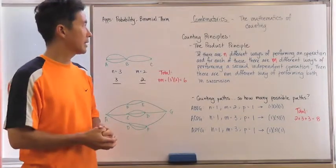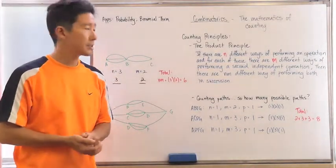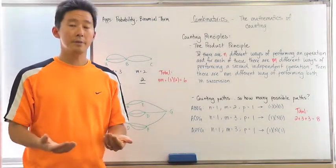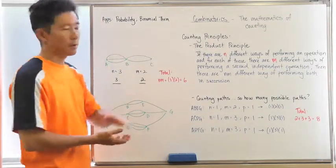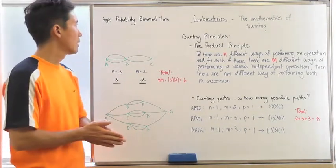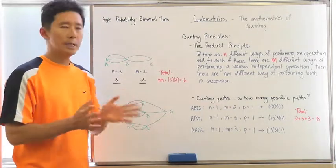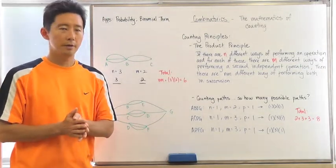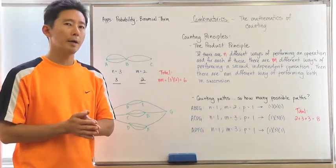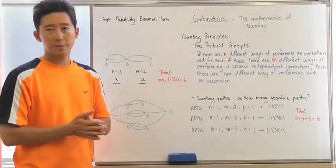Let's take a look at our next topic, which is combinatorics. Combinatorics is the mathematics of counting. We've done some of this in the past — in particular with probability, because if you can count you can calculate probability — and also with the binomial theorem. With the binomial theorem it might not be as clear how combinatorics comes into play, but we'll look at that later after we cover all the different types of combinatorics and counting principles.